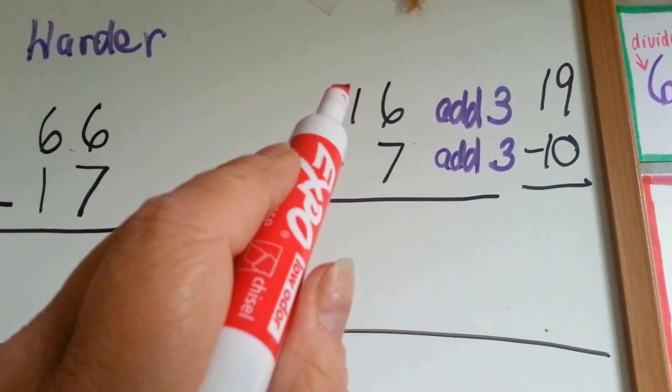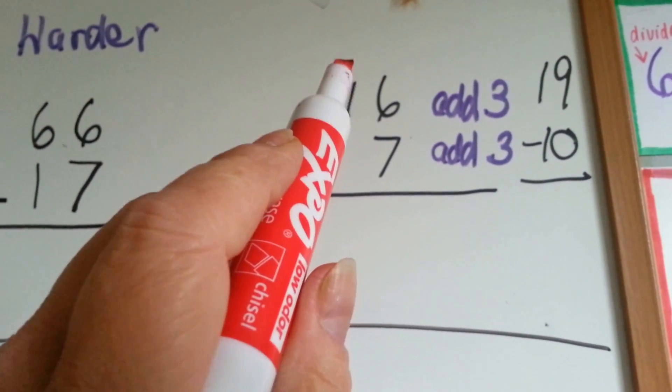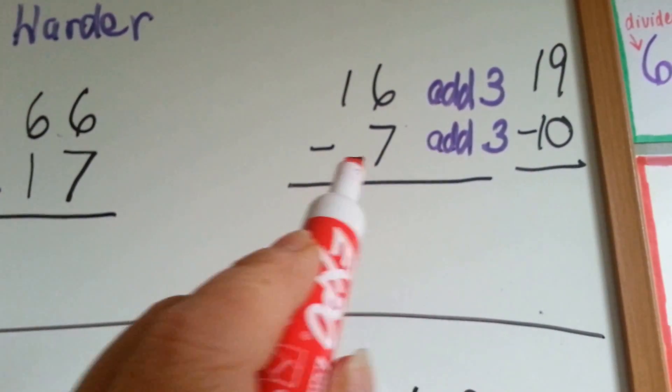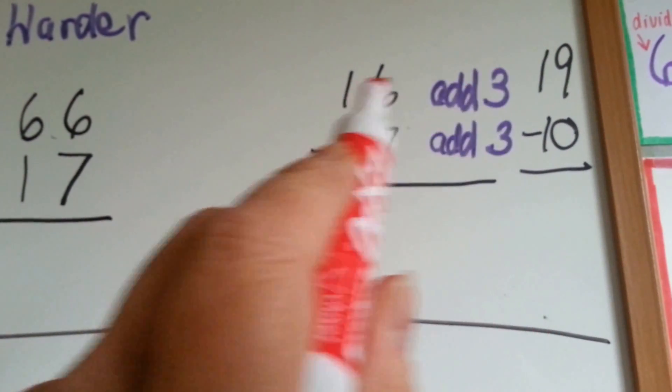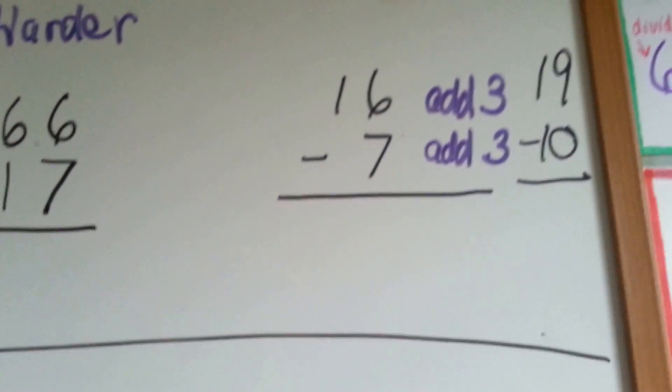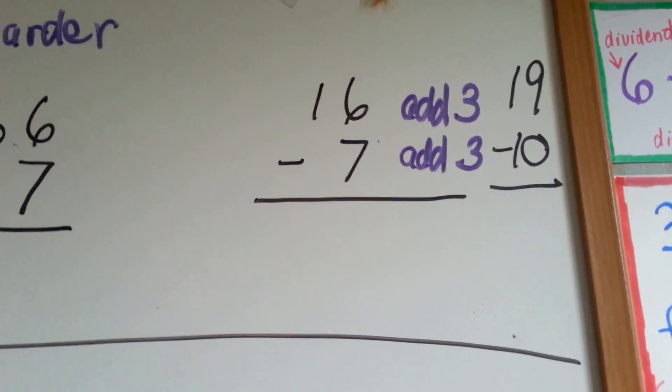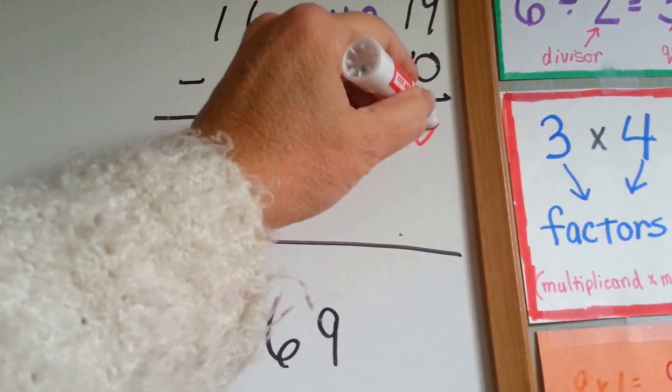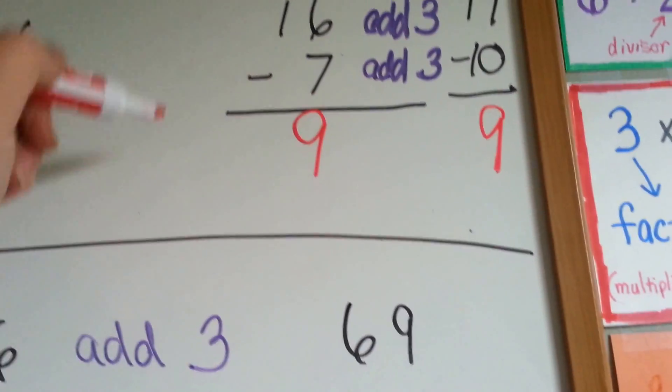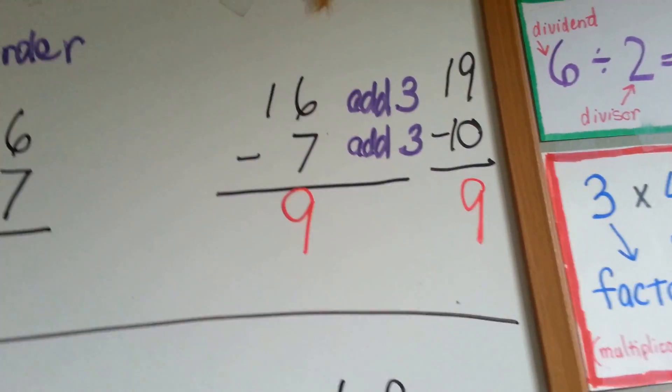So what you do is, the top one is jealous. He wants to be added 3 also. So that becomes a 10, that becomes a 19. And then you have 19 take away 10, which is a lot easier to do in your head. And the answer is 9. The answer is 9 to this one too, but it was easier to do it this way.